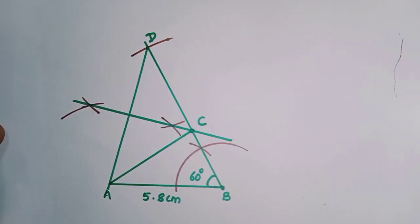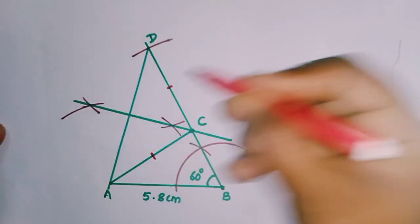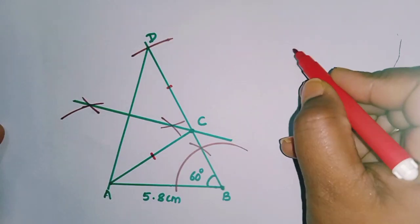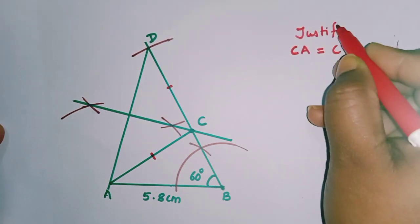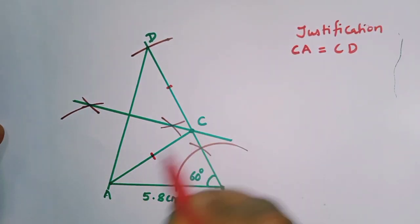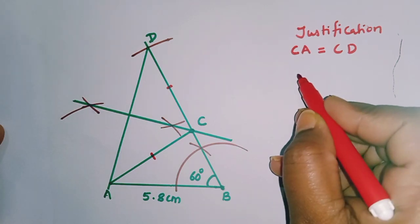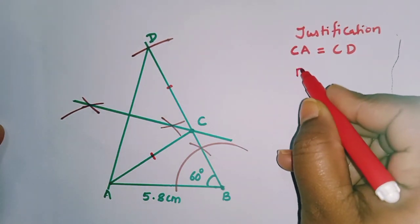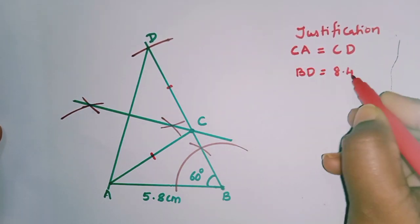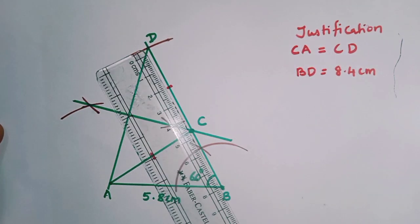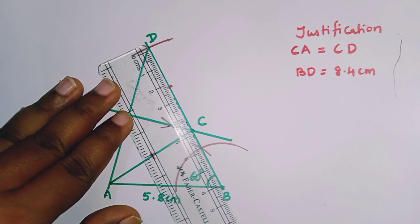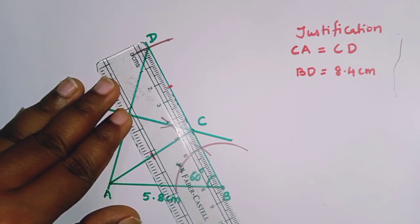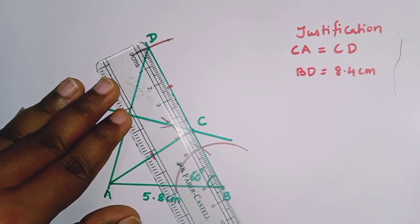Now write down the justification. By construction, we know that CA is equal to CD. Since CA equals CD, we can note that BD equals 8.4 centimeters — you can measure and verify it is indeed 8.4 centimeters.